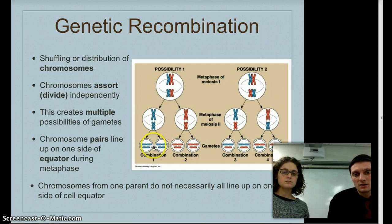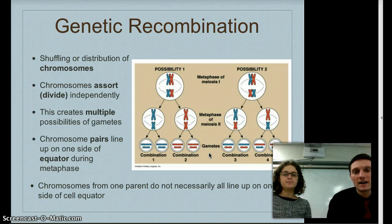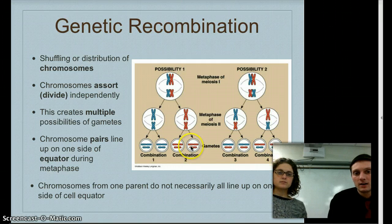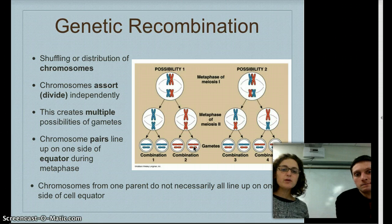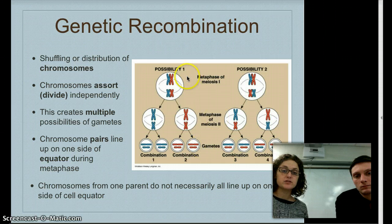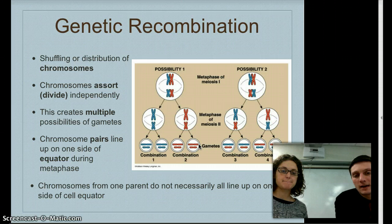If these gametes were sperm cells, and one goes on to fertilize an egg, it's random which one it is. So we have this huge, vast number of different possibilities of gametes that can be formed, and those possibilities are increased even more by which sperm cell goes on to fertilize an egg. It's all random, and it just increases genetic diversity and results in how we all look different. The outcome of meiosis is that you get a gamete with half as many chromosomes as the original parent cell — and we call those haploid.